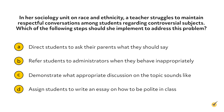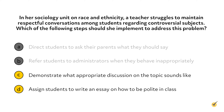Let's look at an example. In her sociology unit on race and ethnicity, a teacher struggles to maintain respectful conversations among students regarding controversial subjects. Which of the following steps should she implement to address this problem? The first choice is a passive response, since the teacher would not actively engage in solving the problem, only the parents would. The second response is a passive one as well, referring the students to someone else. What the test is looking for is that the teacher knows how to solve the problem. Using the third option to illustrate appropriate discussions is an active response, as the teacher is activating their thinking in order to grasp the importance of solving the problem critically. This is the correct answer.